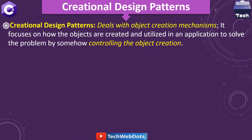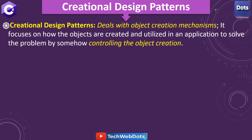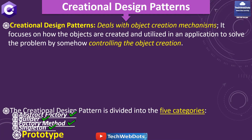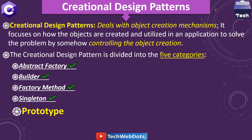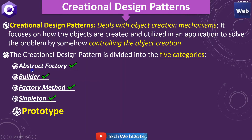In our last session I already discussed that we use creational design patterns to deal with object creation mechanisms, focusing on how objects are created and utilized in an application. We already know there are five categories of creational design patterns, and I have already discussed abstract, builder, factory method, and singleton. The last one is prototype, which we are going to cover today.